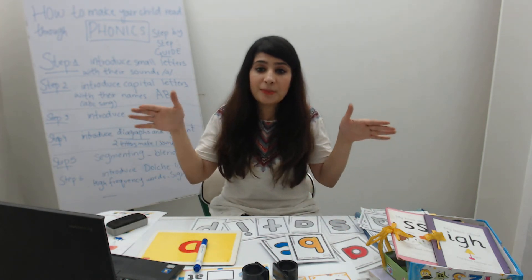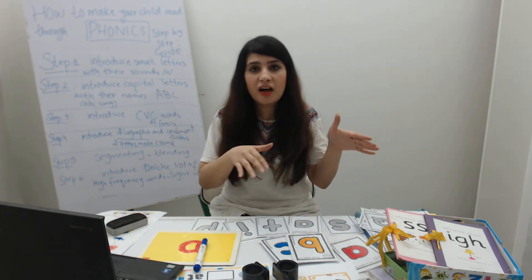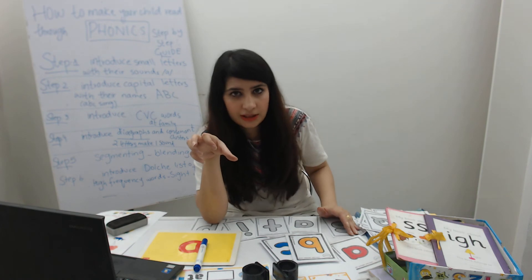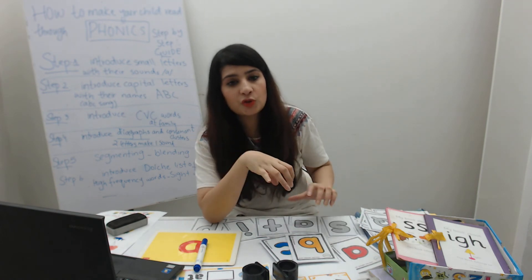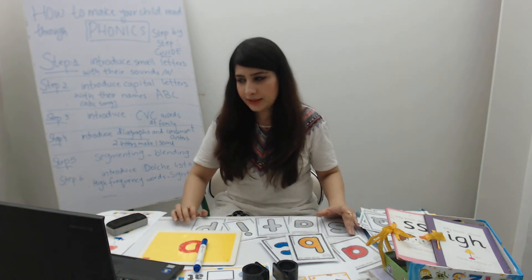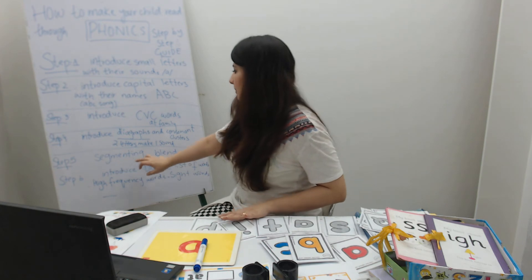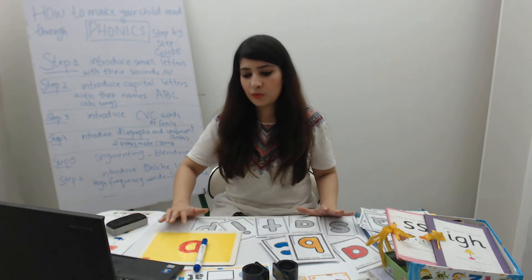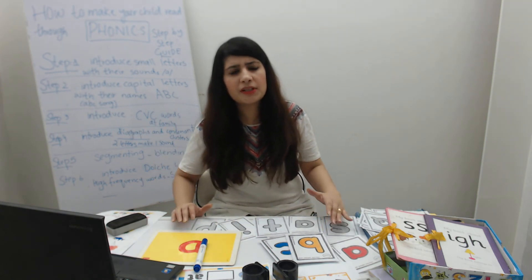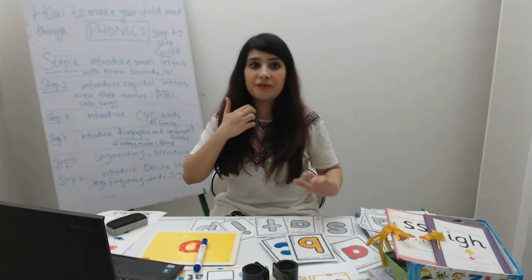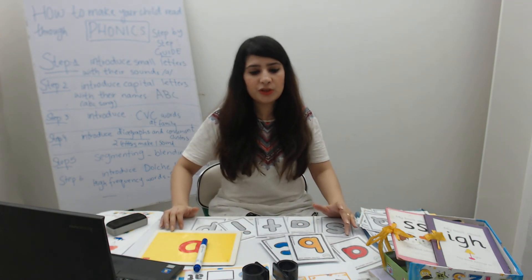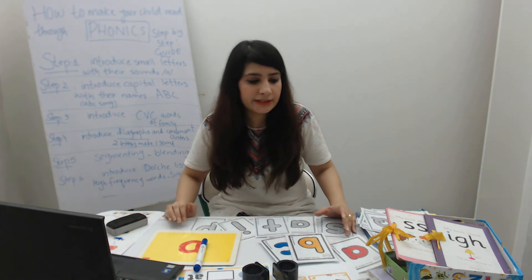Then we blend them together — we mix them: alif plus noon plus alif plus re becomes 'annaar'. When we blend them, we put them all together. Then we move to the Dolch list words. You may have heard of them — high frequency words, 100 sight words, Dolch list, Fry list. These are all words that make up 90% of our language.